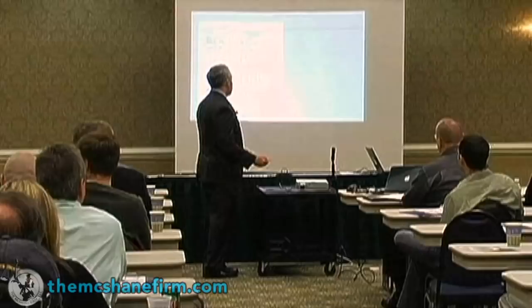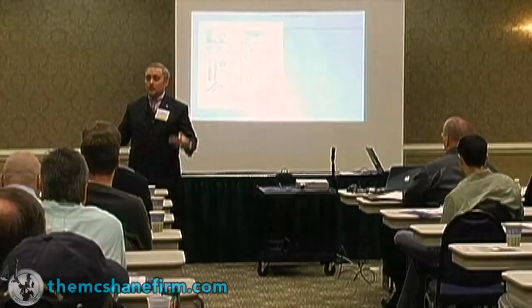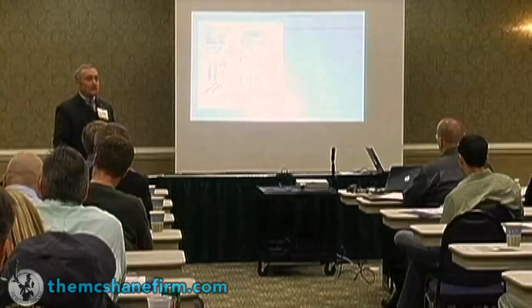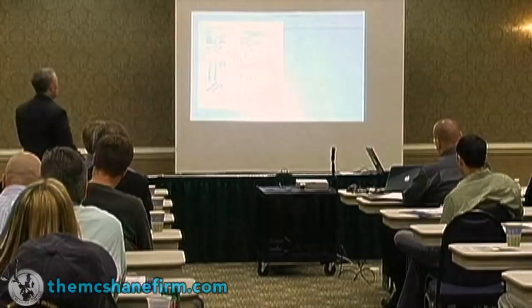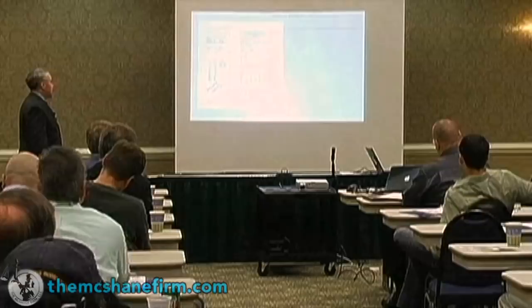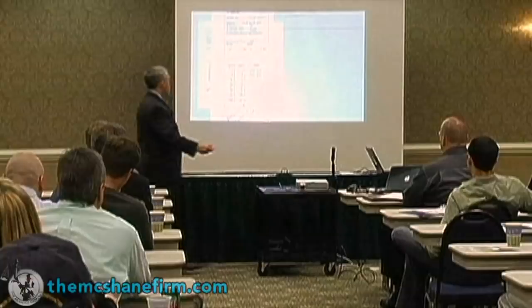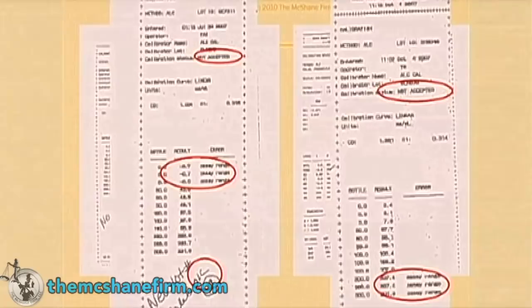This is what's called a calibration curve. It's not important for you to know exactly what it means, but a calibration curve is the way the analytical device is shown to be within tolerance — that it's accurate and precise. You don't have to be a rocket scientist to understand this. It's low-hanging fruit. They run known standards through the machine to verify accuracy. And blowing this up, you can see right here — it says 'calibration status: not accepted.'